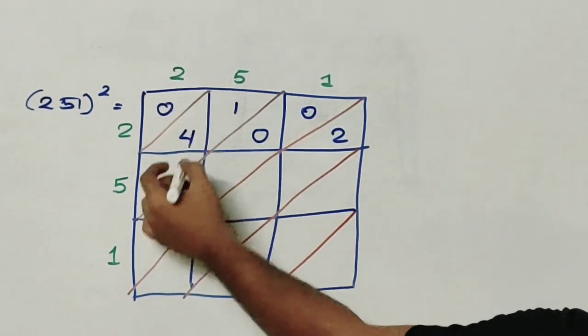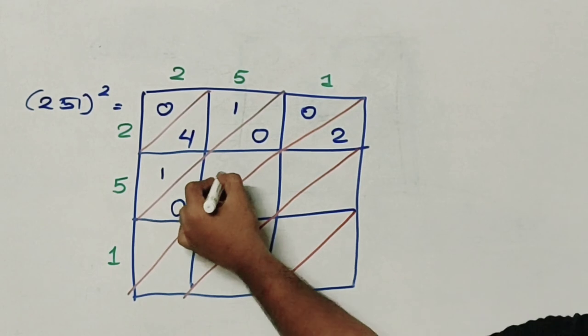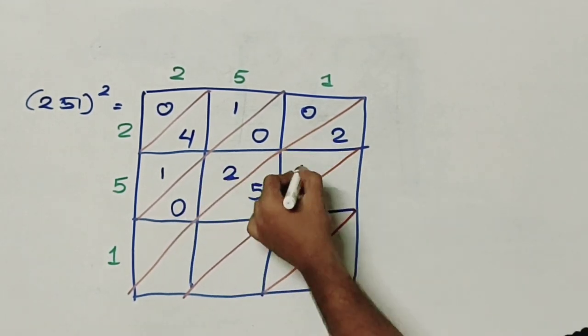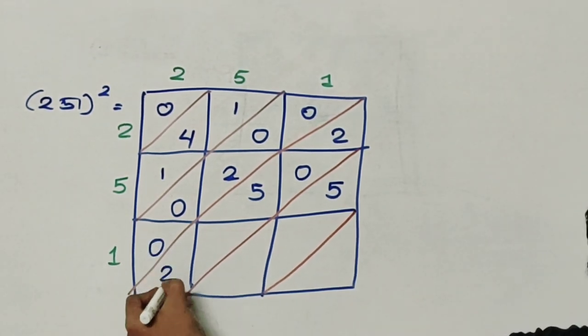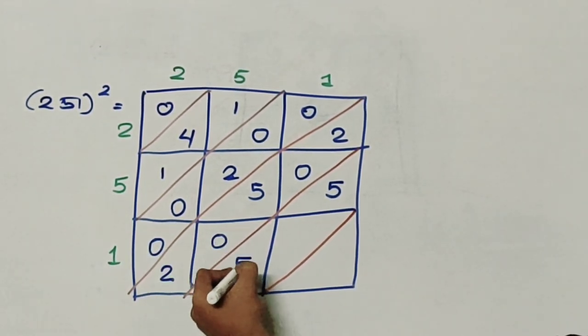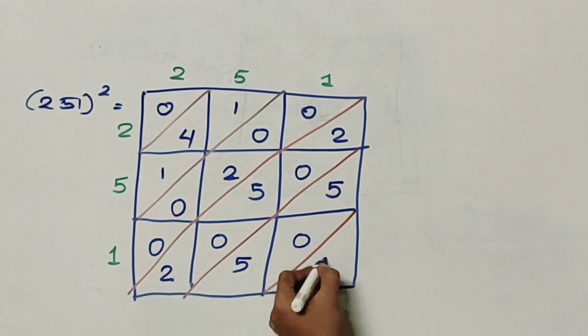5 into 2 gives me 10. 5 into 5 gives me 25. 5 into 1 is 5. 1 into 2 is 2. 1 into 5 is 5. And 1 into 1 is 1.